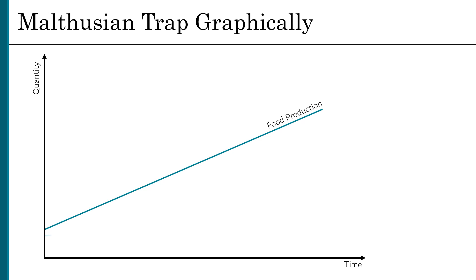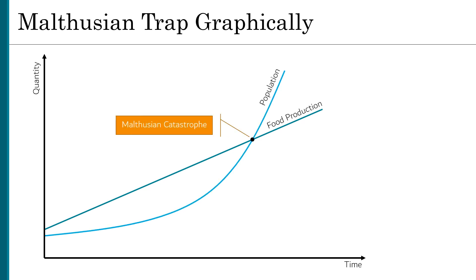We can evaluate the Malthusian trap mathematically with a graph. Essentially, what Malthus was saying is that population grows exponentially, but our technological progress, especially in food production, grows linearly. Where they cross is where we invite a Malthusian catastrophe, because a population beyond this point will be in excess of the amount of food available.